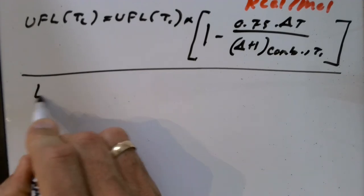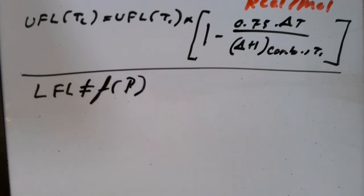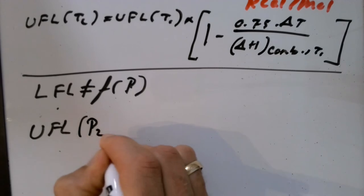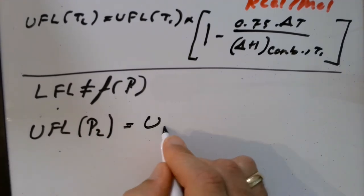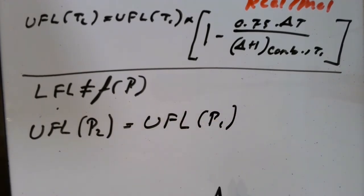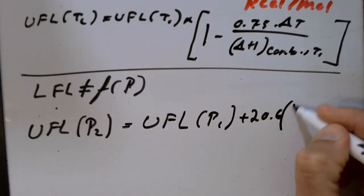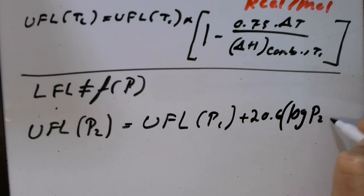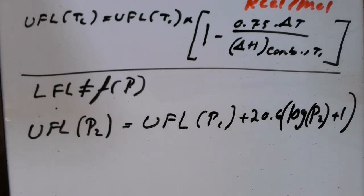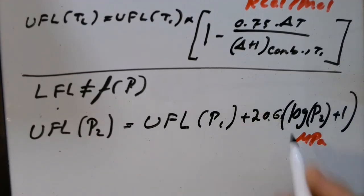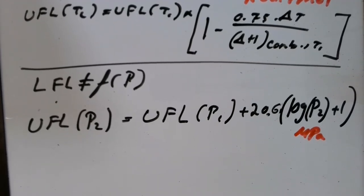The LFL is essentially not a function of pressure — it's a very weak function. But the upper flammability limit does depend on pressure. To calculate UFL at a different pressure P₂: UFL(P₂) = UFL(P₁) + 20.6 × log₁₀(P₂ + 1), where P₂ is in megapascals and P₁ is typically 1 atm standard conditions. The constant 20.6 applies specifically with megapascals; you'd need a different constant for other units.